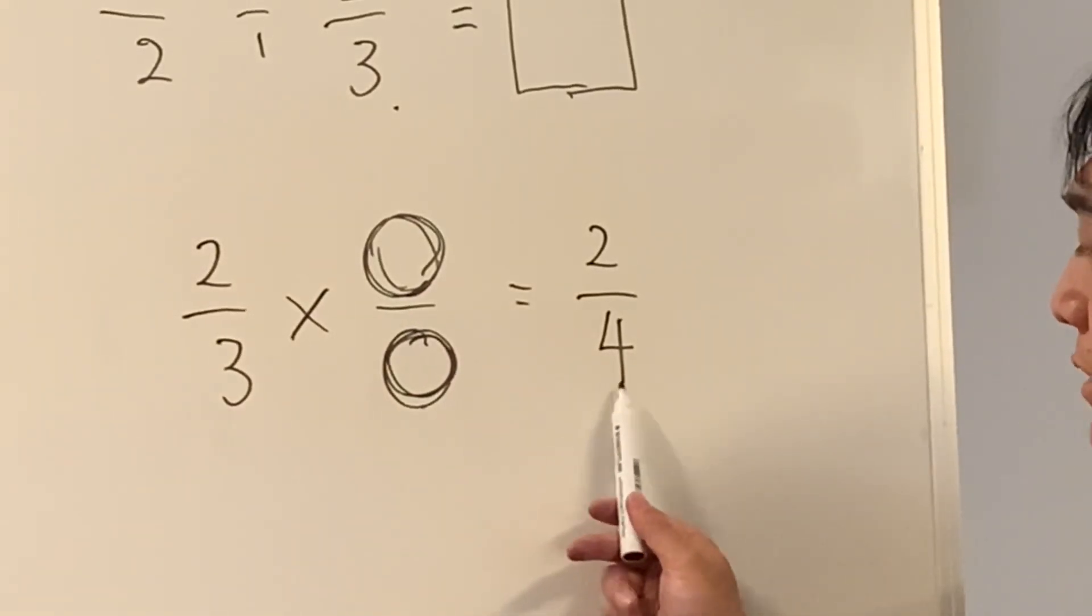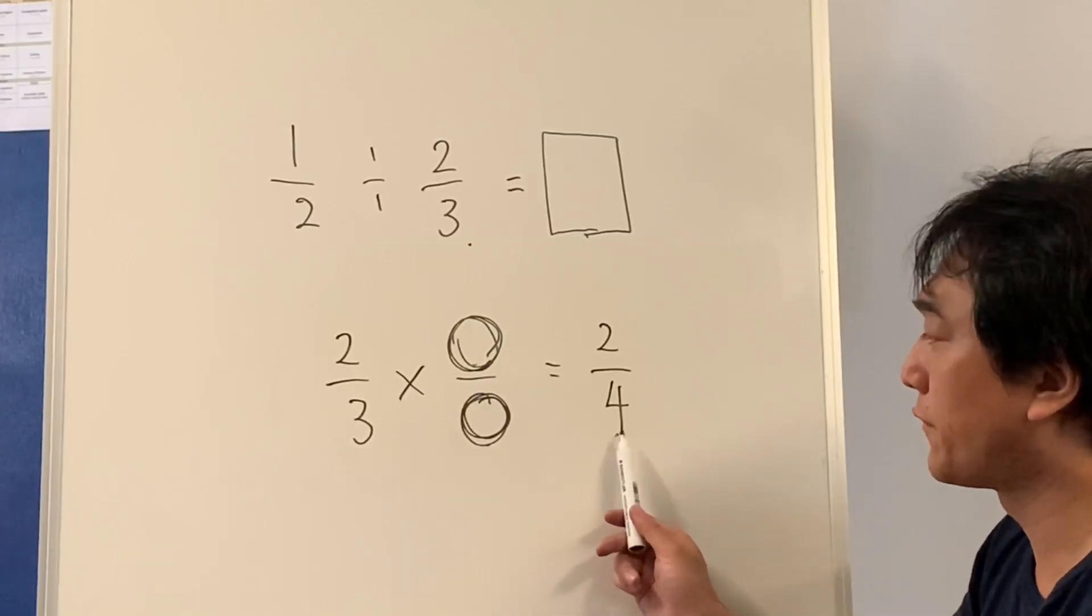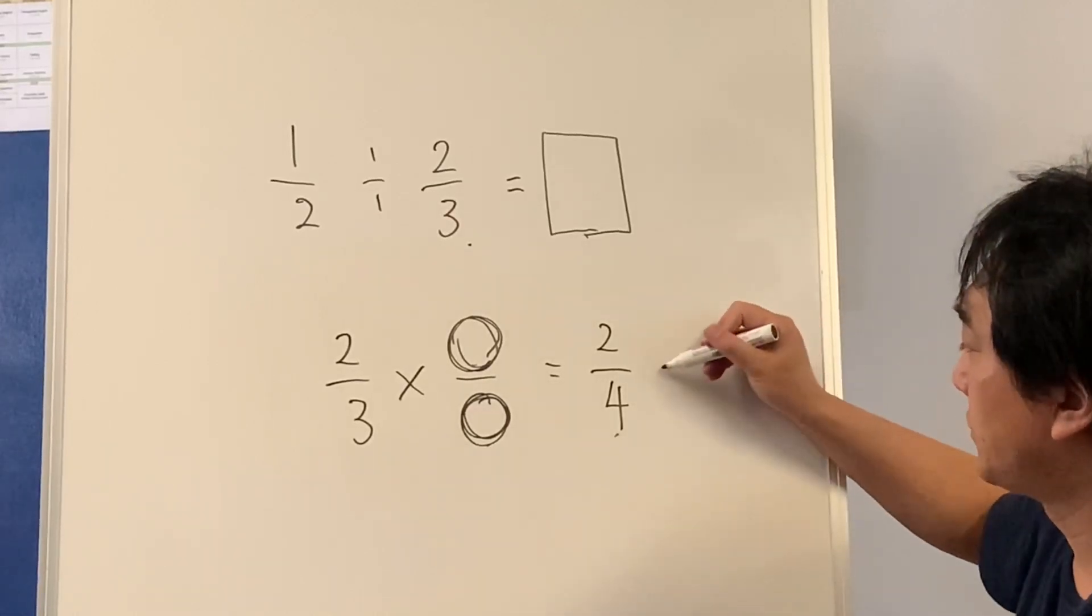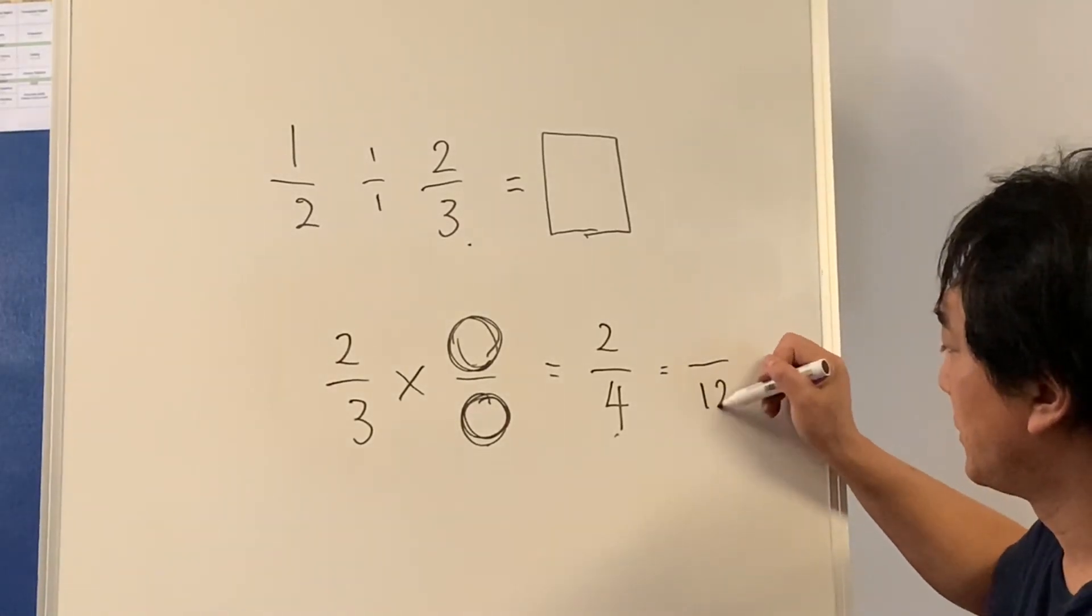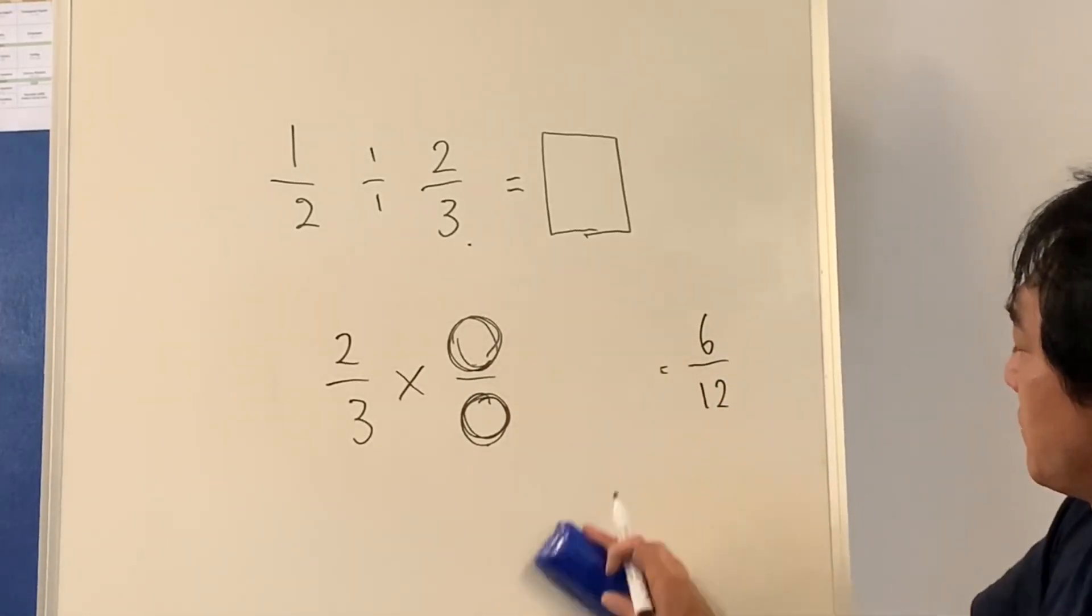So the number here needs to be a multiple of three. So maybe twelve. So let's change to twelve. So that's six twelfths. Right?